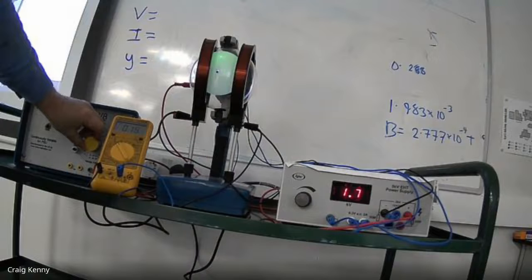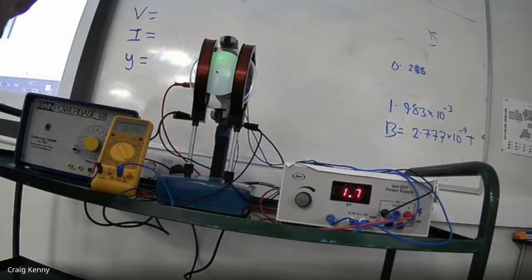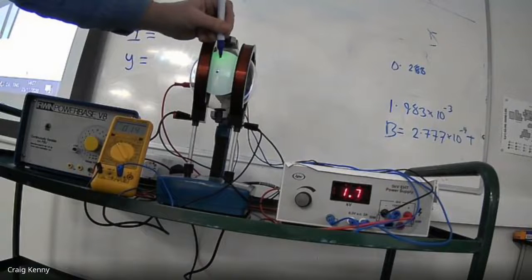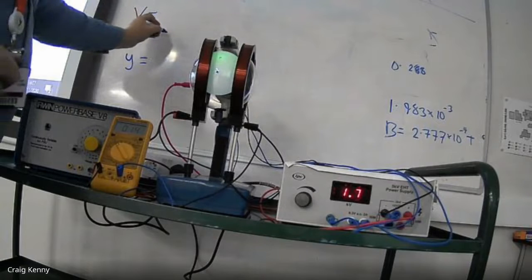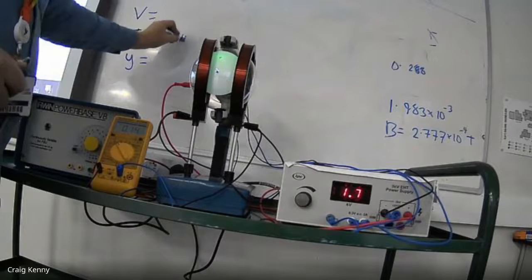You can see that moving up and down the screen as I change the current through the coils. I'm going to go to 0.14 amps. So my current is 0.14 amps.